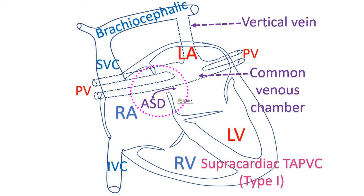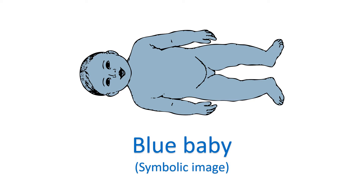Oxygenated blood returning from the lungs to the right side of the heart gets pumped back to the lungs. If there is no ASD, the left ventricle may not get any blood to pump at all. Blood returning from the body to the right side of the heart also gets pumped to the lungs. Due to the mixing of oxygenated and oxygen-poor blood in the right atrium, the blood pumped out into the body has less oxygen than normal. This produces bluish discoloration of lips, tongue, and skin known as cyanosis. Thus, TAPVC is a cyanotic congenital heart disease.